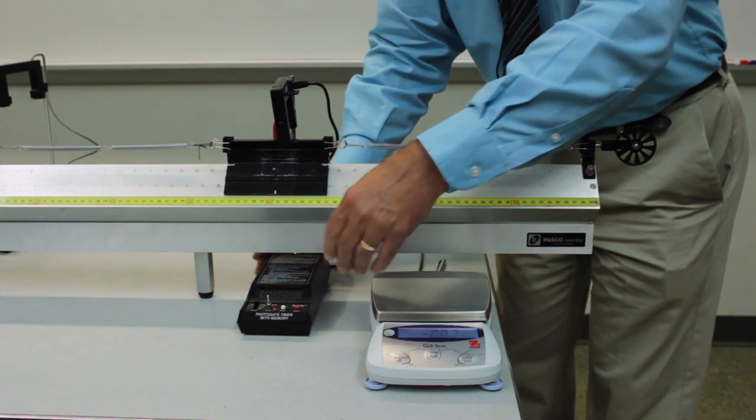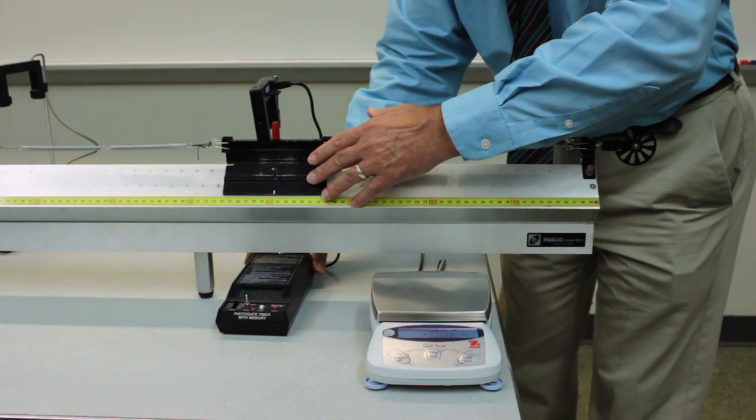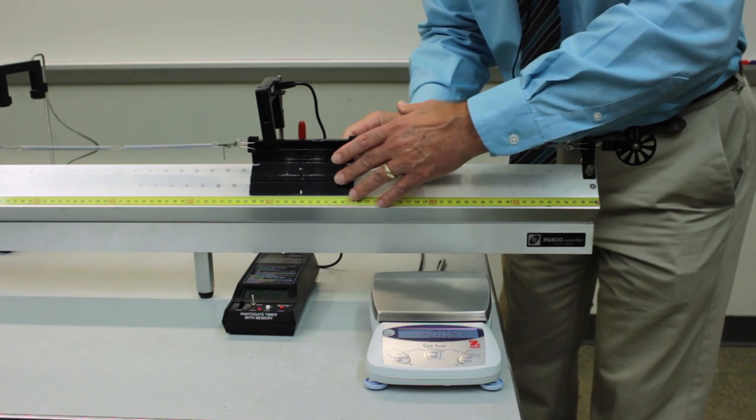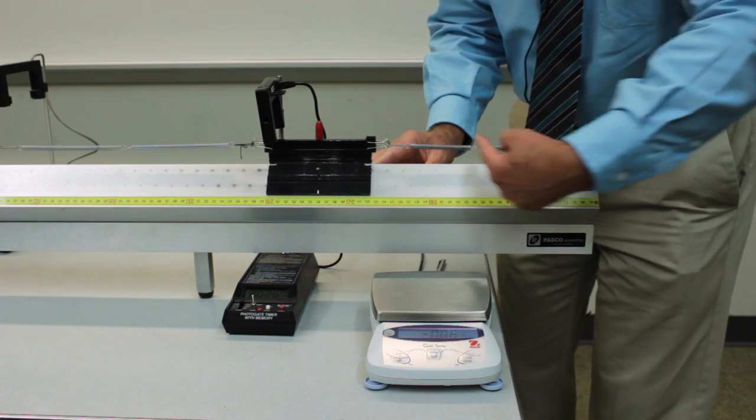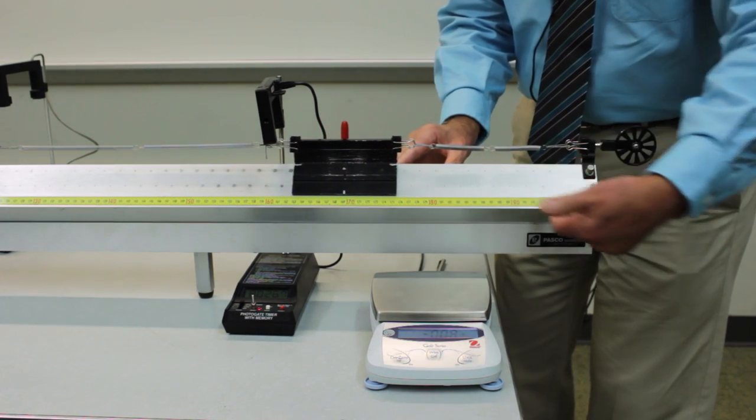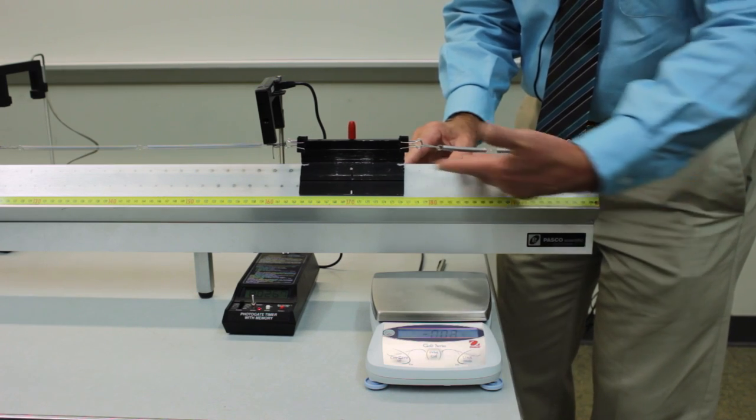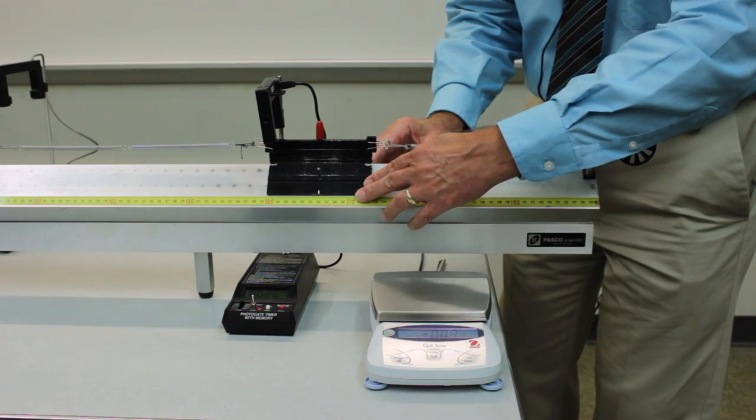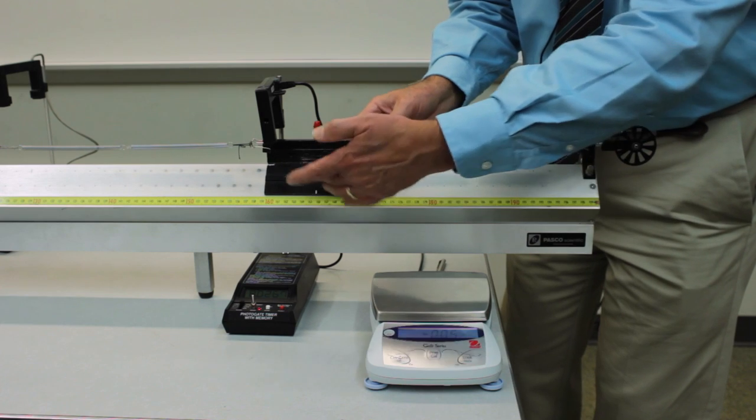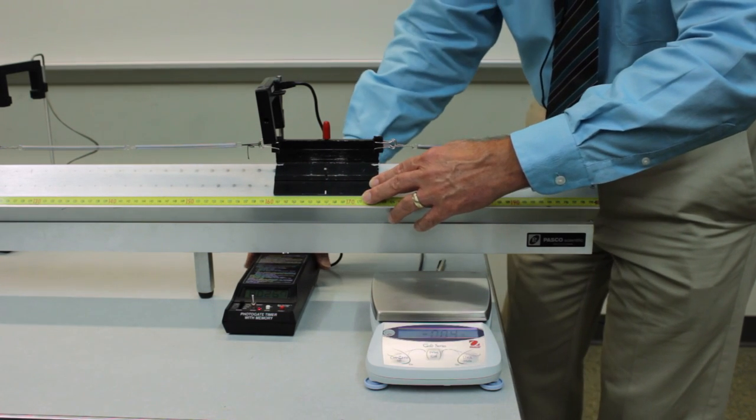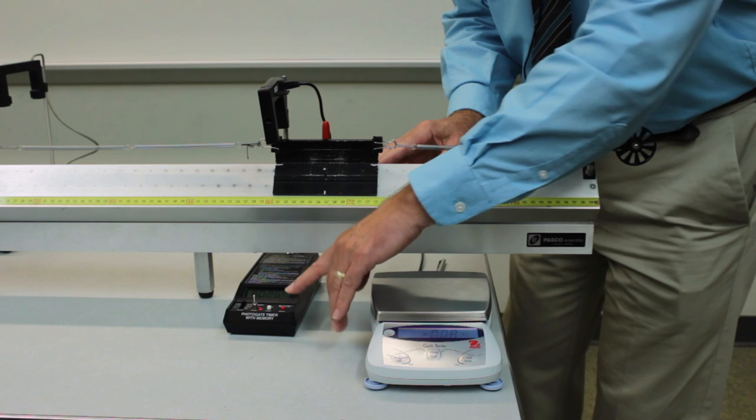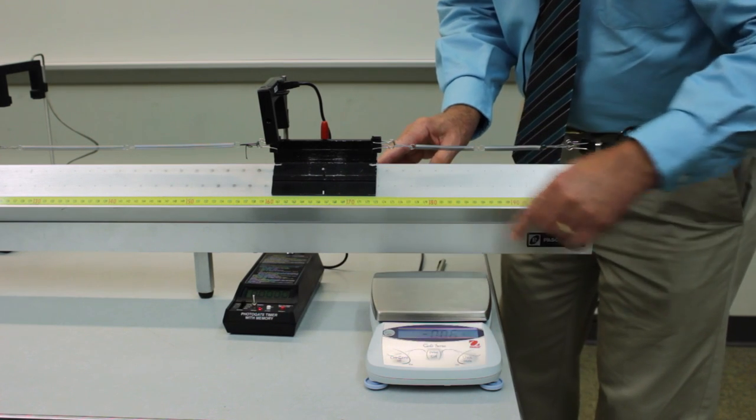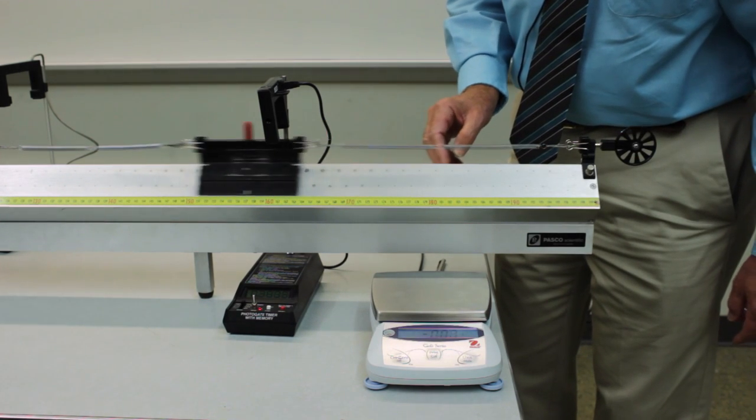Then what we do is displace the glider. Again, being careful not to collapse the springs. You want the springs to be fully participating in the force on the system. Just pull the glider back completely out of the photogate. Press the reset button on the timer and let it go.